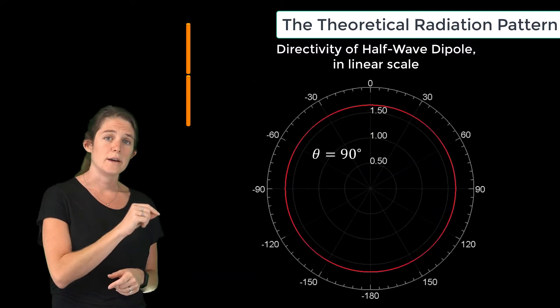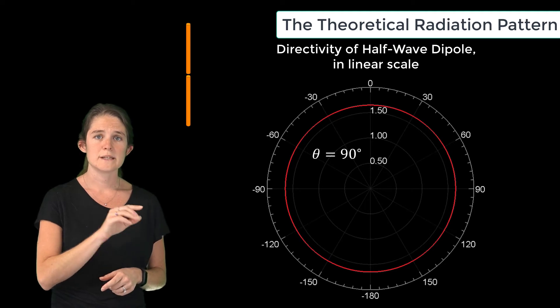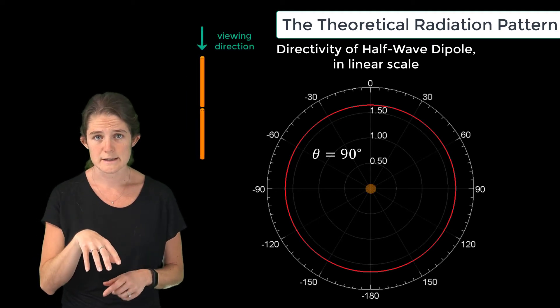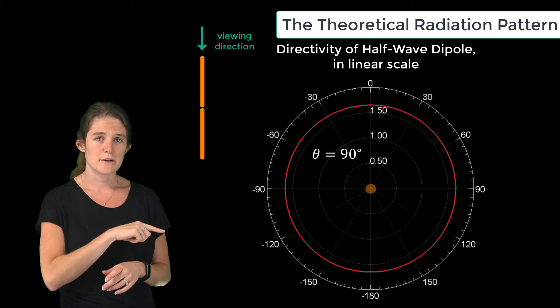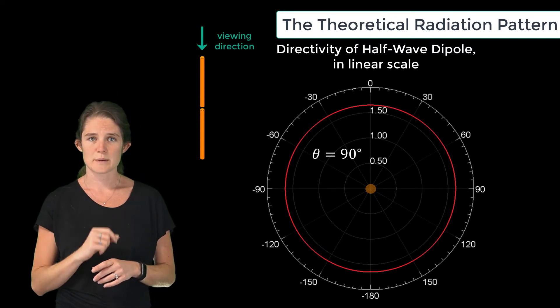This is another plot of the same radiation pattern, but this time viewed from the positive z-axis on the theta equals 90 plane. Here you see the rotational symmetry of the radiation outward on the XY plane.